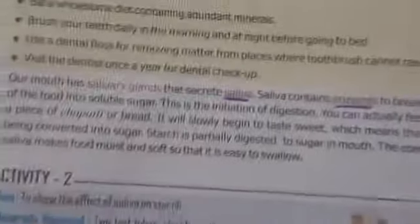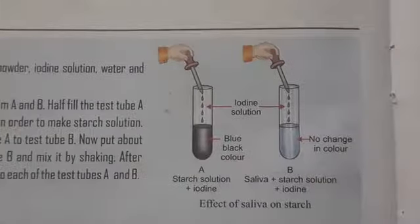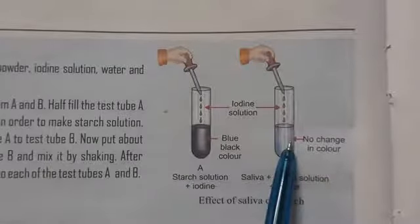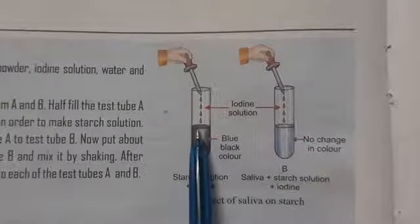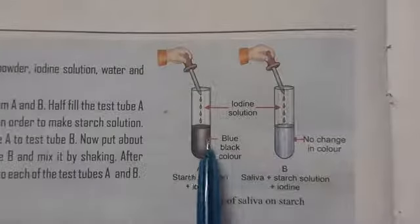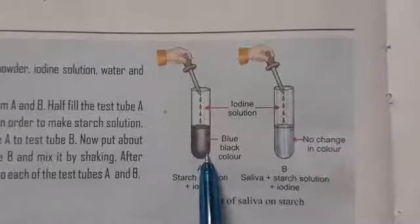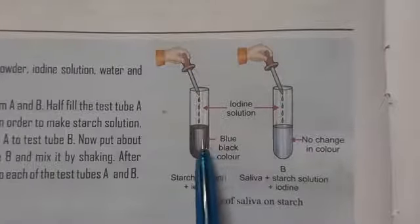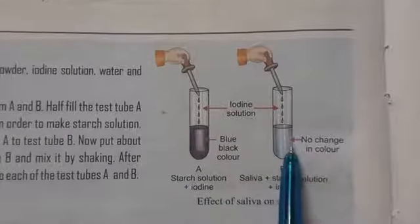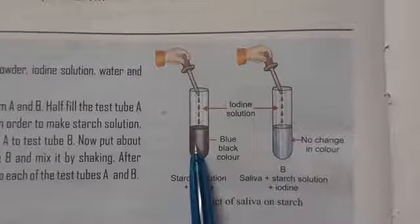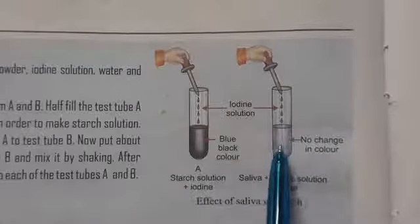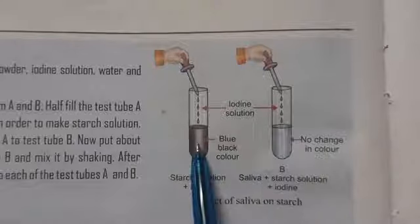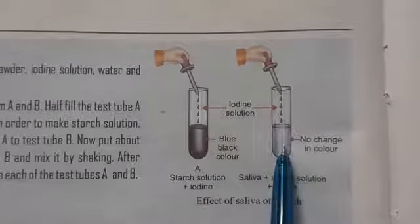You can do one experiment — one activity is shown here: see the effect of saliva on starch. You have taken two test tubes, test tube A and test tube B. You fill test tube A half with water and mix starch powder to make a starch solution. From this starch solution you put some into test tube B, and then in test tube B you add some saliva from your mouth. After 5 to 6 minutes, you add iodine solution to both test tubes. What will you observe?